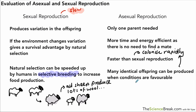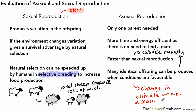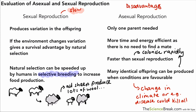Now this can actually be a disadvantage as well, because all the individuals are clones of each other — they have identical genes and therefore identical characteristics. So if there was a change in climate or a disease, if it affects one of the individuals in that population it could affect all of them, causing a big drop in population from one small environmental change. In sexual reproduction, variation allows the population to adapt to those changes.